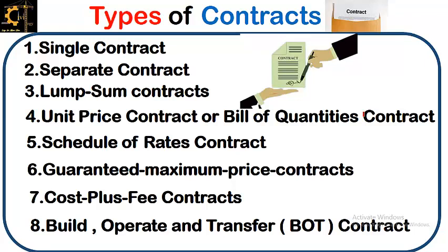Being a civil engineer you must know about these types of contracts. Whether you are a site engineer or construction engineer, in the upcoming years you will be at a managerial post, so you must know what these contracts are about, their benefits, advantages and disadvantages. The eight types are: single contract, separate contract, lump sum contract, unit price contract or bill of quantities contract, schedule of rates contract, guaranteed maximum price contract, cost plus fee contract, and build operate and transfer contract.